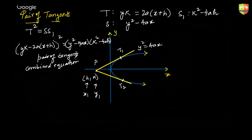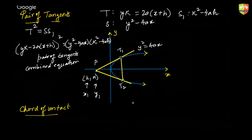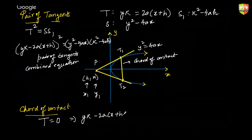Nothing new here; it is very similar to the concept learned before. Now, chord of contact: the chord of contact is the line connecting the points of contact of these two tangents. Just like in the case of a circle, the chord of contact equation is T = 0, which means yk − 2a(x + h) = 0.